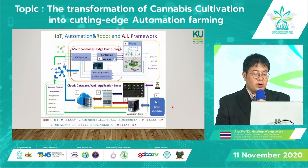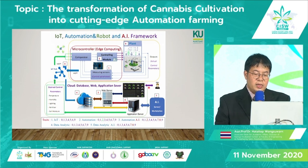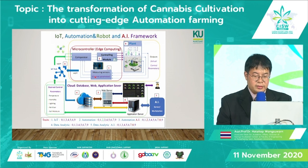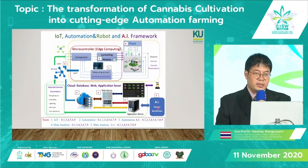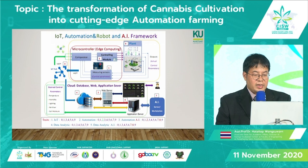As we close the presentation, regarding cultivation control conditions: many parameters need to be controlled, and the benefit of technology is the solution framework in a cloud system. Many data points will be collected and verified to determine the best condition for cannabis cultivation with AI technology, and the proper control conditions will be sent back to the controller to optimize control.